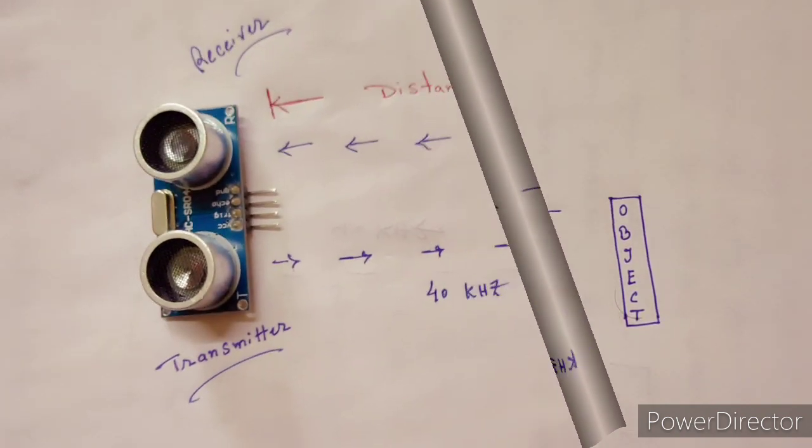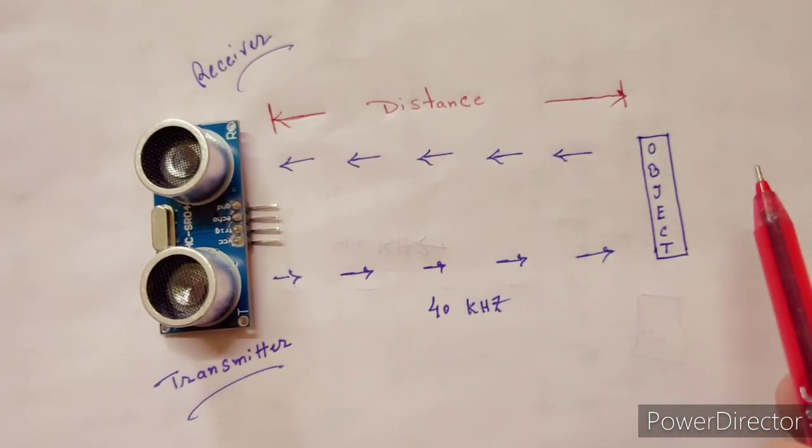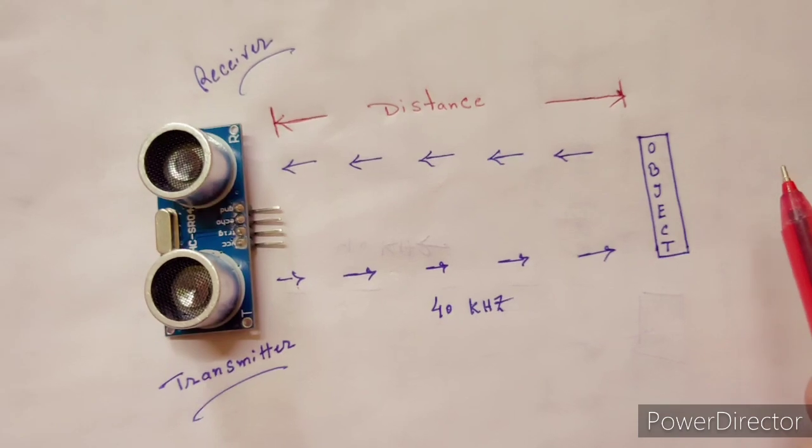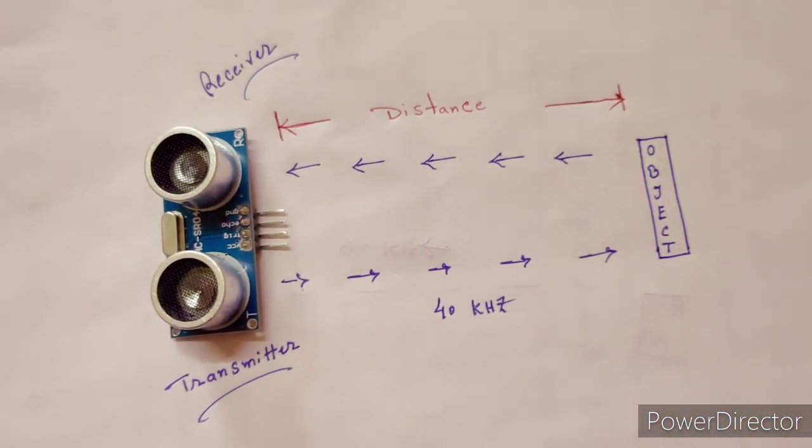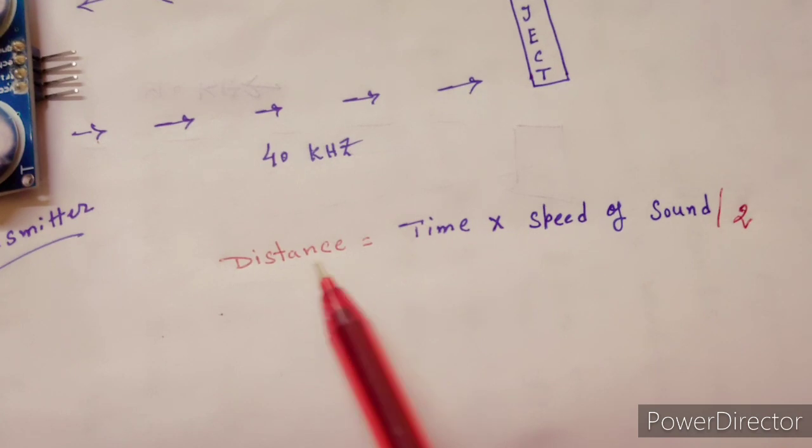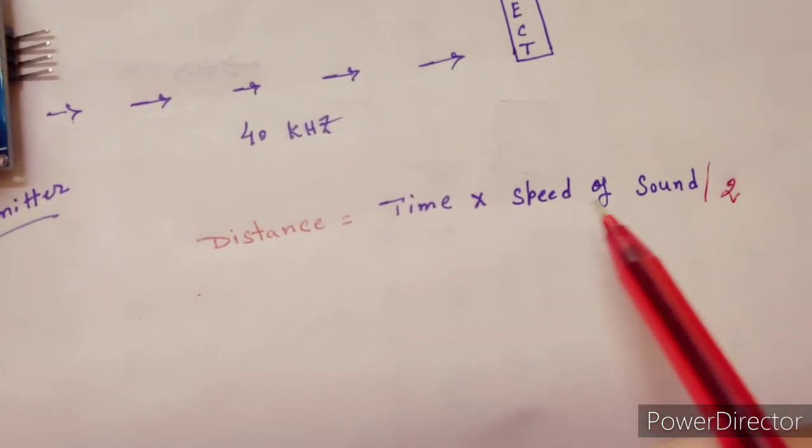The distance of the object can be calculated by measuring the travel time and the speed of sound. So distance equals time times speed of sound.